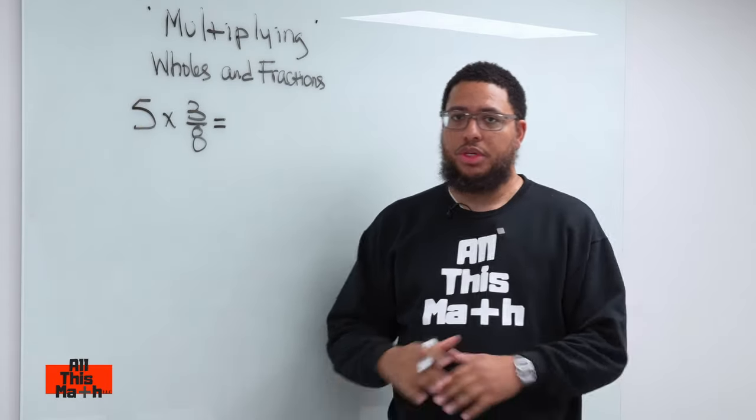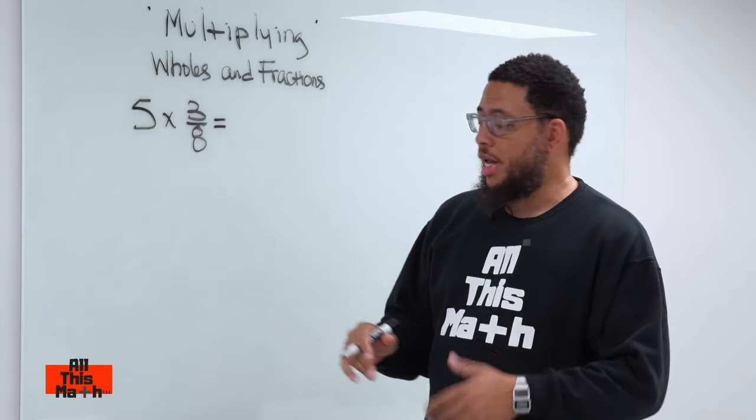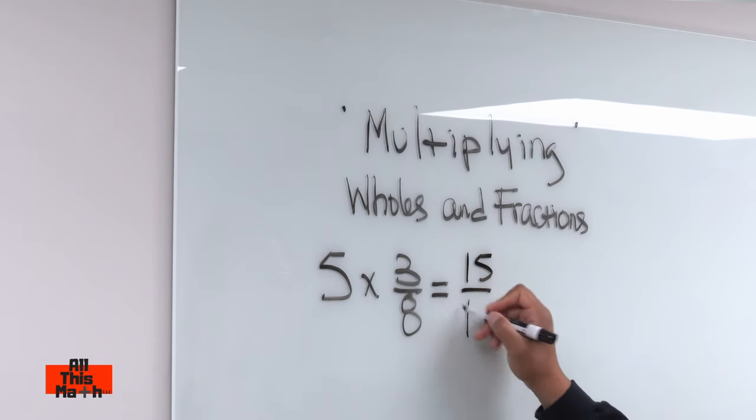Now when you're multiplying fractions you don't need a common denominator so we don't have to find an LCD or any of that. We can just multiply straight through. But this is what a lot of people do. A lot of people would end up with 15 over 40.